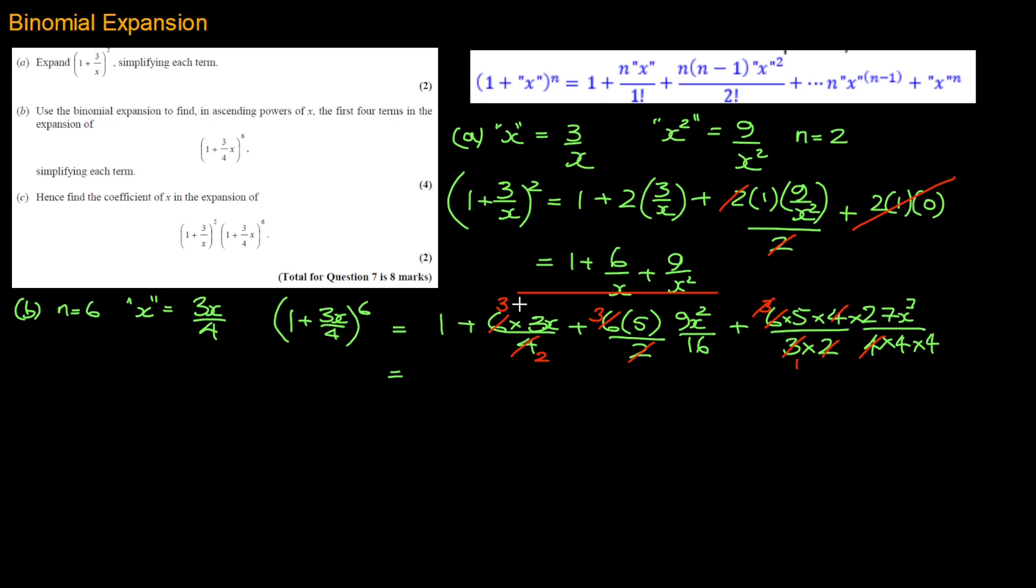Our only problem now is sorting out what's left. That's up to your neatness when you do all this cancelling. I have got 1 plus I've got a 3 still on the top, so this is going to be 9x over 2 plus it's going to be x squared, and I've got 3 times 5 which is 15. 15 times 9 is 135.